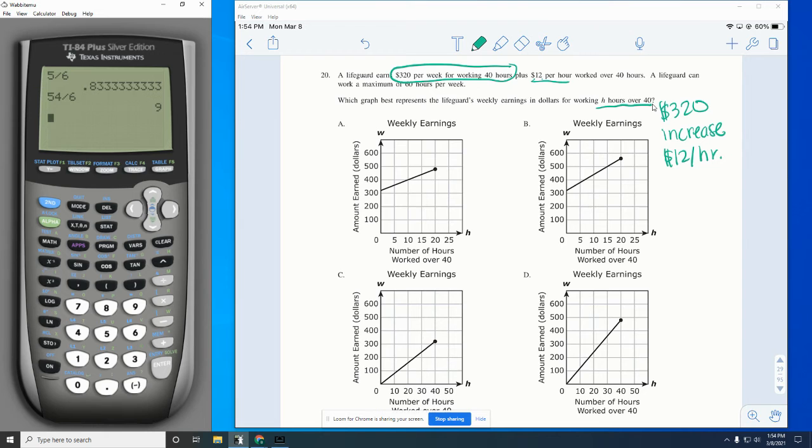Now, one thing that's important here too is they can only work a max of 60 hours. So that's why these all have endpoints. So if we start at $320 and you can get $12 an hour with a max of 60 hours total, that's an additional 20 hours. Remember, we're talking 40 hours over 40. So at 40 hours, they have $320. They can only work a max of 60. So that's where that 20 hour difference comes into play.